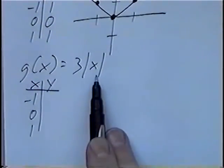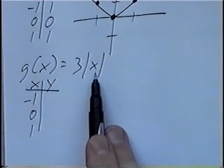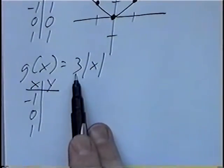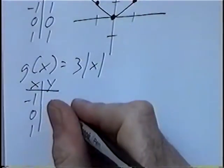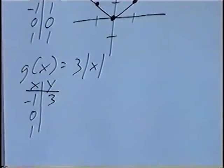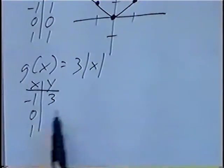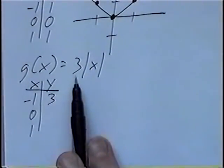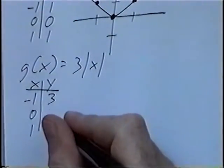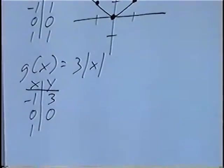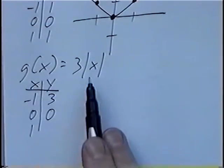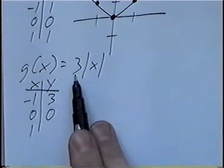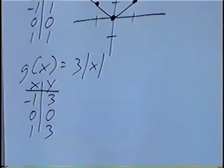Plugging in negative 1: the Absolute Value of negative 1 is positive 1, and positive 1 times 3 would be 3. The Absolute Value of 0 would be 0, and 0 times 3 would still be 0. The Absolute Value of 1 is 1, times 3 would be 3.